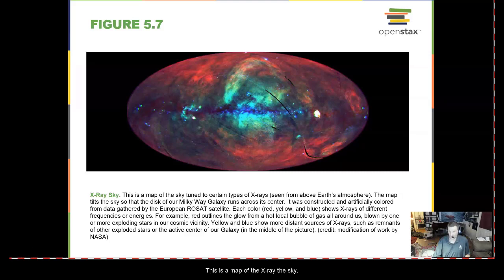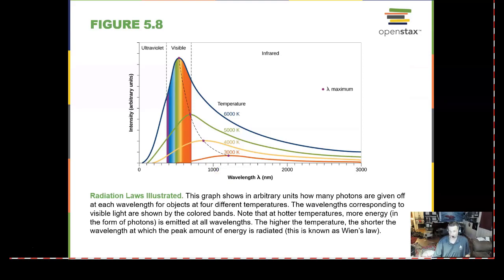This is a map in the x-ray sky. We can describe radiation laws. This is known as Wien's Law. And this says that if an object is red, it's going to have a cool temperature and be faint. If it is blue or white, it's going to be a very hot temperature and be a lot brighter.